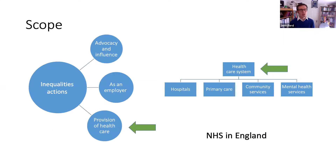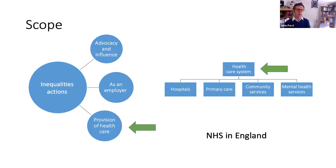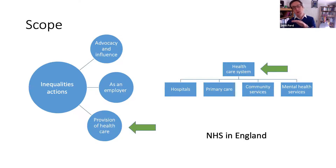In terms of scope, healthcare organisations can address health inequalities in lots of different ways: through advocacy and influence, as employers — the NHS is currently the fifth largest employer in the world — and through provision of healthcare. This talk focuses on healthcare provision, touching briefly on advocacy and employment, with a particular focus on the NHS in England, though hopefully with transferability for other healthcare systems.